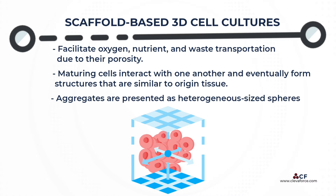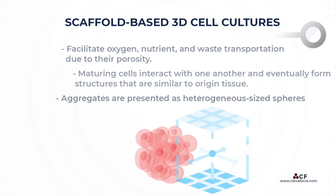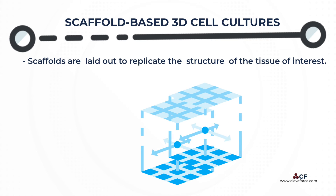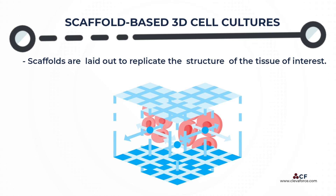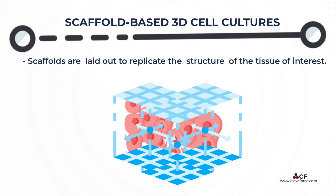Scaffolded 3D cell cultures usually have a larger surface area and are generally larger than those that do not. The scaffolds are laid out to replicate the structure at macro, micro, and nanoscale and the function of the tissue of interest. However, the larger and more complicated a scaffold, the more difficult it is to extract for analysis.